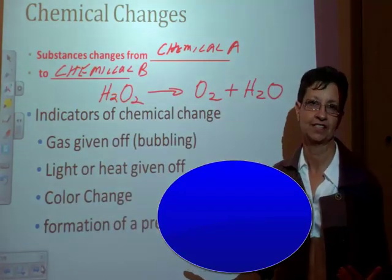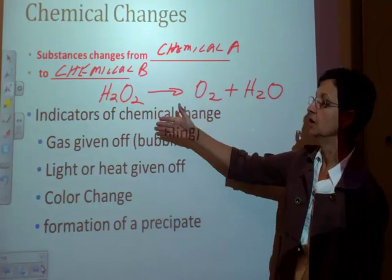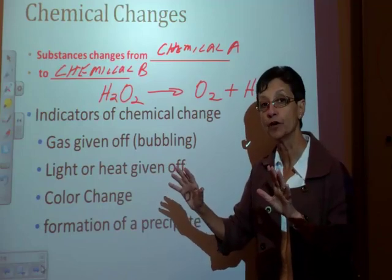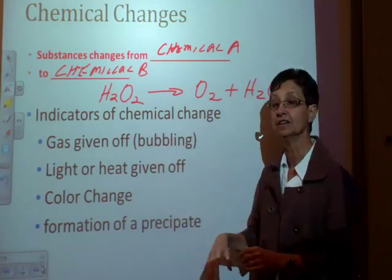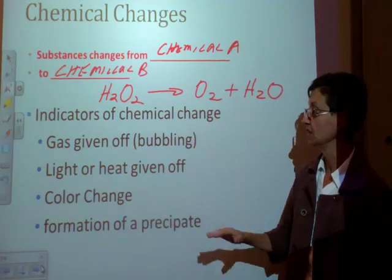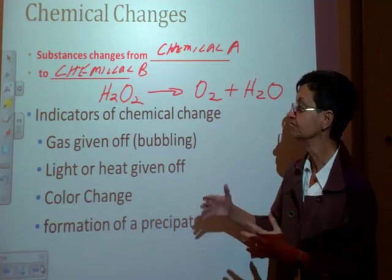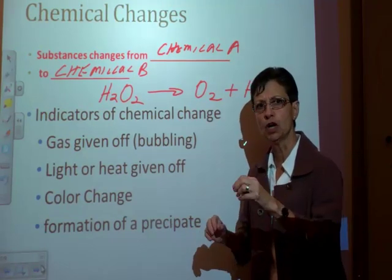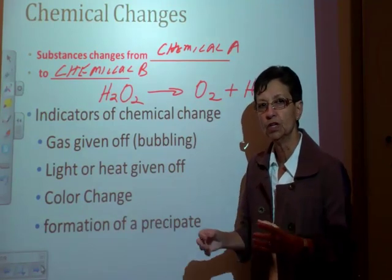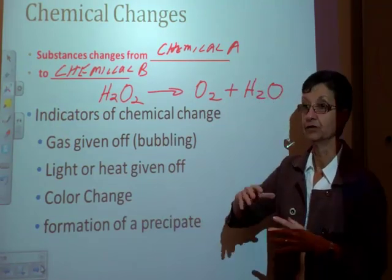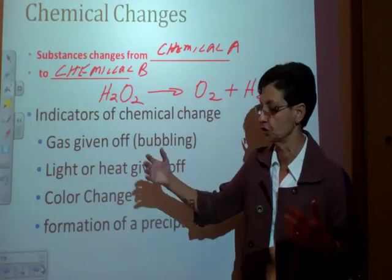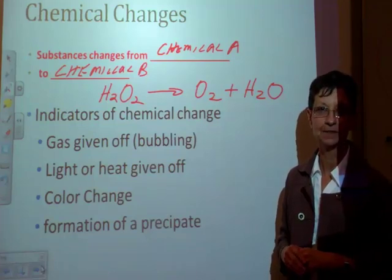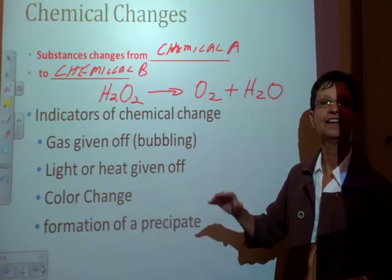So how do we know that a chemical change has taken place? Well, there are some ways. If it gives off a new gas and you see bubbling, that's a chemical change. If light or heat is given off, that's a chemical change. If you have a color change — not as in adding food coloring to water, but a true color change, like from green to yellow or from purple to orange — that is a chemical change. And finally, the formation of a precipitate. I'm going to show you examples of some of these in the lab momentarily.